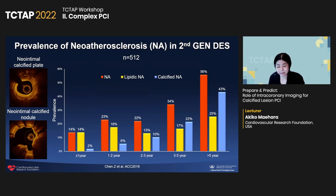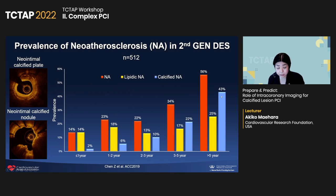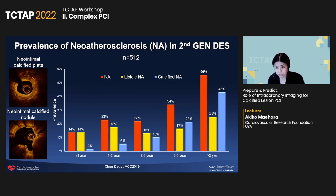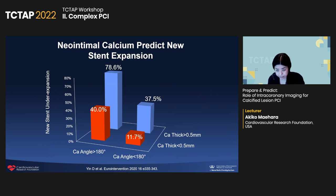Finally, a slightly different topic: when treating in-stent restenosis, neoatherosclerotic calcium is not a rare phenomenon. If the patient comes back more than three or five years later, the prevalence of neoatherosclerotic calcium is quite frequent. Sometimes you see very thick calcium in the stent or even a calcified nodule in the stent due to neoatherosclerosis. Understanding what's happening in the stent and confirming the amount of calcium in the in-stent restenosis is also important.